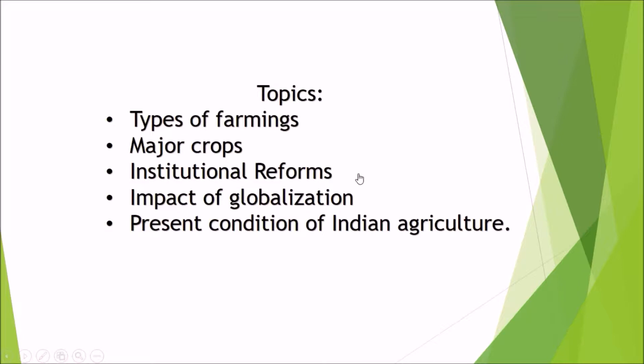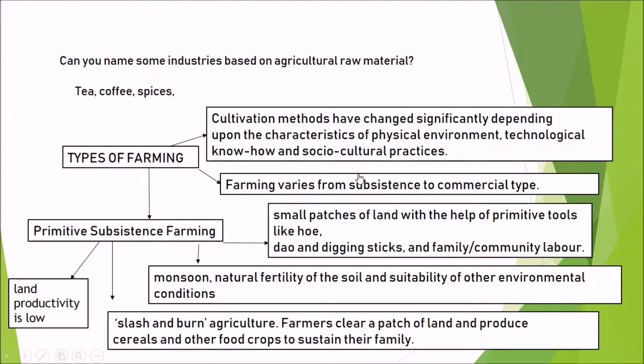Now getting into our topic, the topics we are going to discuss in this chapter include: types of farming, major crops, institutional reforms, impact of globalization, and the present condition of Indian agriculture. Let us see each topic in detail.